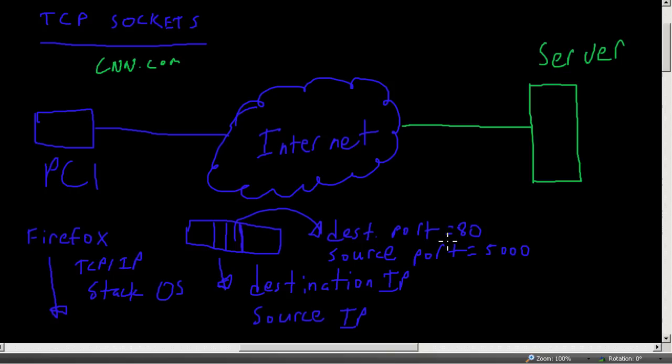The reason we have ports is because your computer could be connecting to many other computers on the internet, or even the same computer. We need some way of distinguishing whether traffic is meant for the web, FTP (file transfer protocol), SMTP, POP for email, or something like BitTorrent. We need different ports to specify multiple applications going to the same computer.